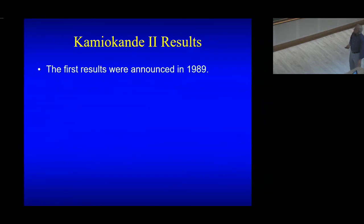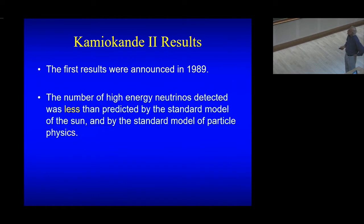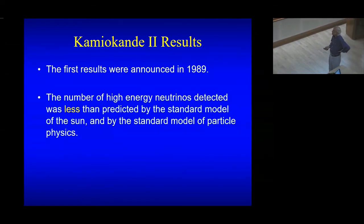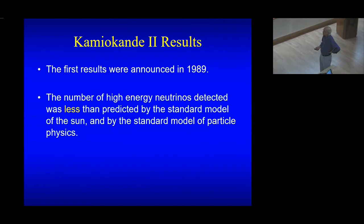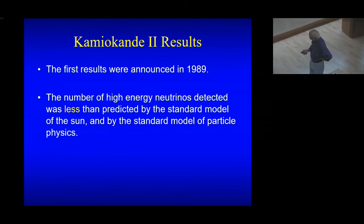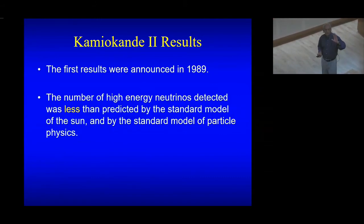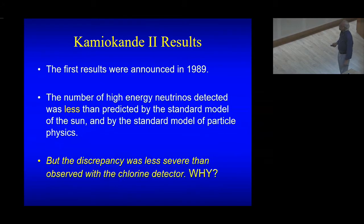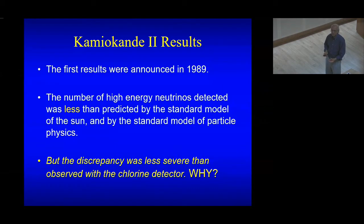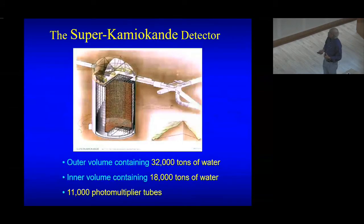The first results were announced in 1989. The number of high-energy neutrinos detected was less than predicted by both the standard model of the sun and the standard model of elementary particle physics — same as Davis's 1968 result. But the discrepancy was less severe: Davis said he could detect only 33%, while these people said they could detect 45%. So they planned a really big experiment — the Super-Kamiokande.